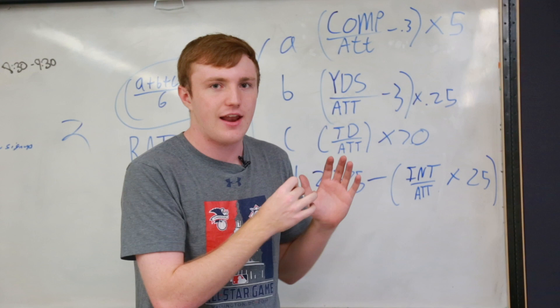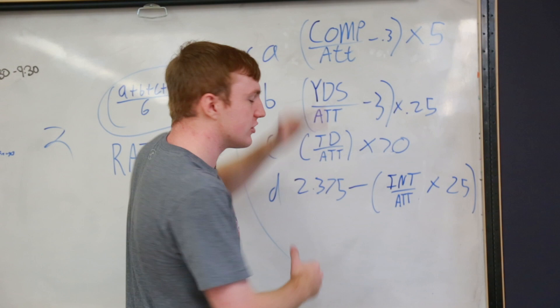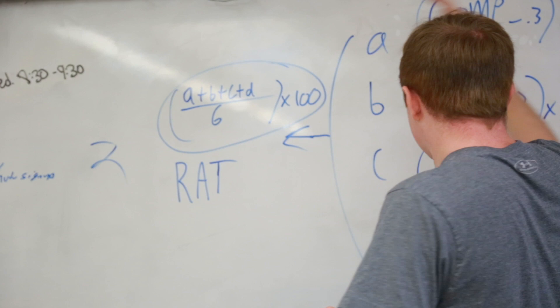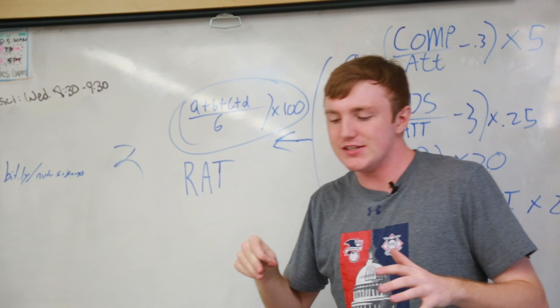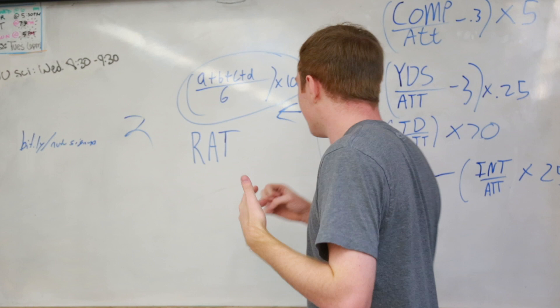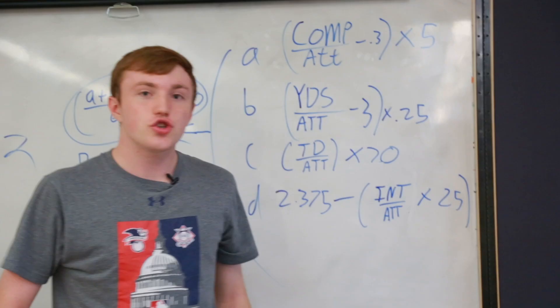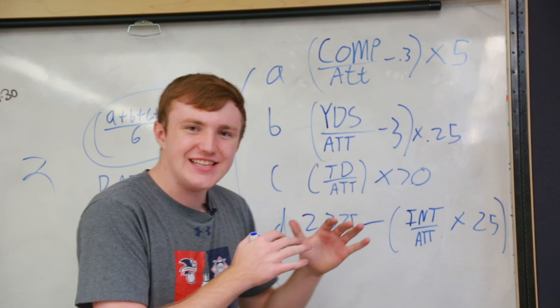Interceptions times 25 — apparently that's 25 times as valuable. It actually makes sense to use constants to give value to different events. But the problem is all these constants describe how valuable the components are, then we put them all into A plus B plus C plus D over six, times 100. The point of dividing by six and multiplying by 100 is to get a good quarterback to around 100, a really good one to around 120, and under 100 means not great.